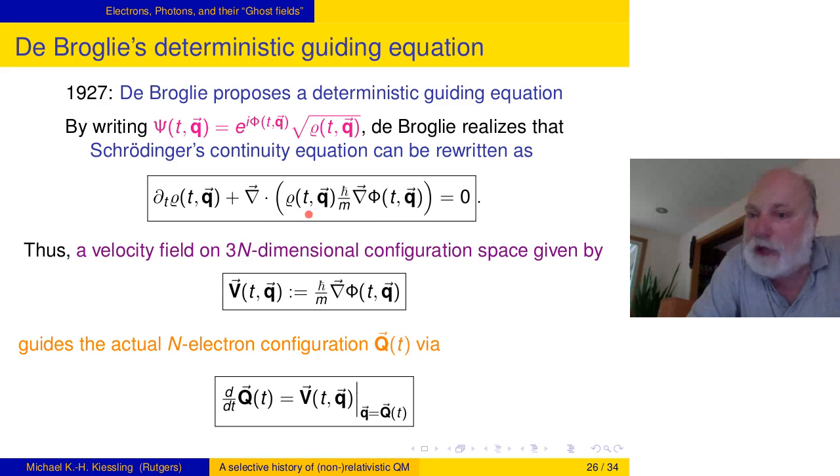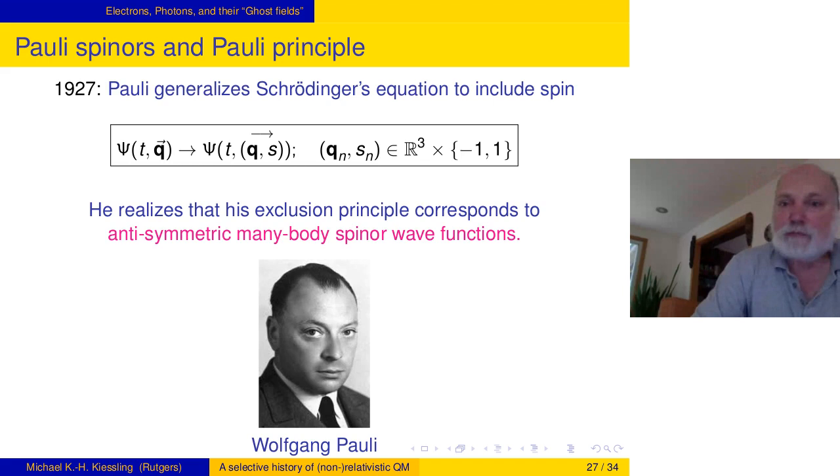If rho is the absolute value squared of psi, then the square root is the length. Make that polar decomposition at each point t and q, and then the continuity equation can be rewritten into this form. Where there was a j, you now have rho times exactly h-bar over m gradient phi. Rho times velocity. He says, this is my velocity field, but velocity in three n dimensions. He says, this field guides my particles. Think of a river that is flowing, and there is a feather that lands on the surface of the water, and it's being transported along with a flowing river. Just put it in three n dimension. The velocity field is the gradient of some scalar function of t and q. Here is the guiding equation he writes down. Time derivative of the actual position is the velocity field at time t and q evaluated at the actual position.